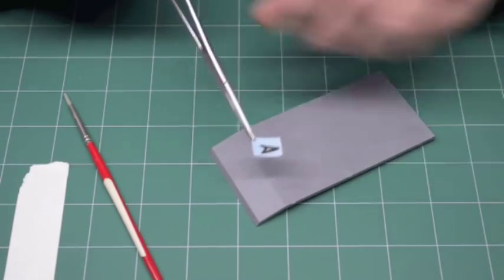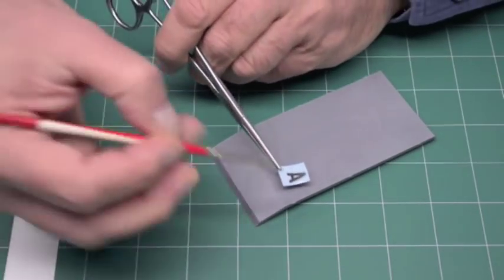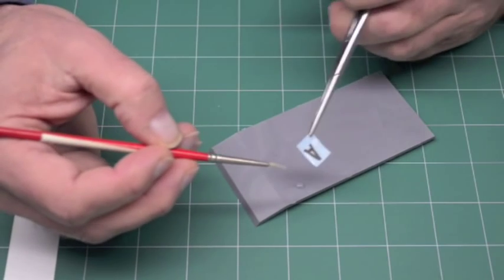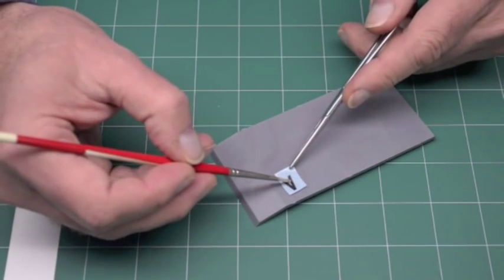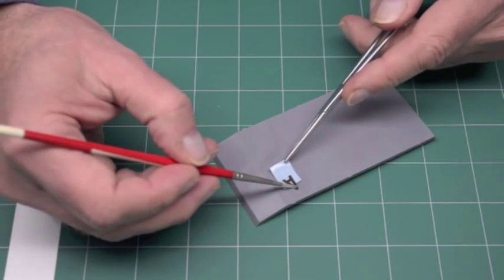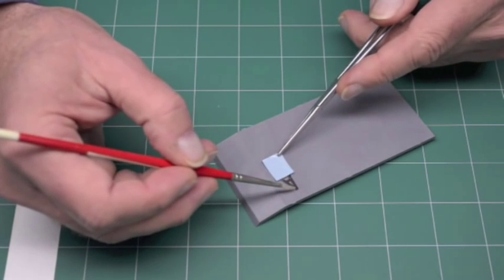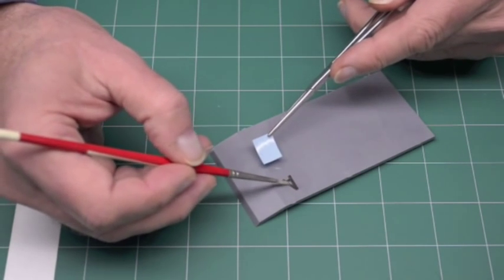You take your kit part, or your model, and slide the transfer off onto the model. Just like that. Then you can position it.